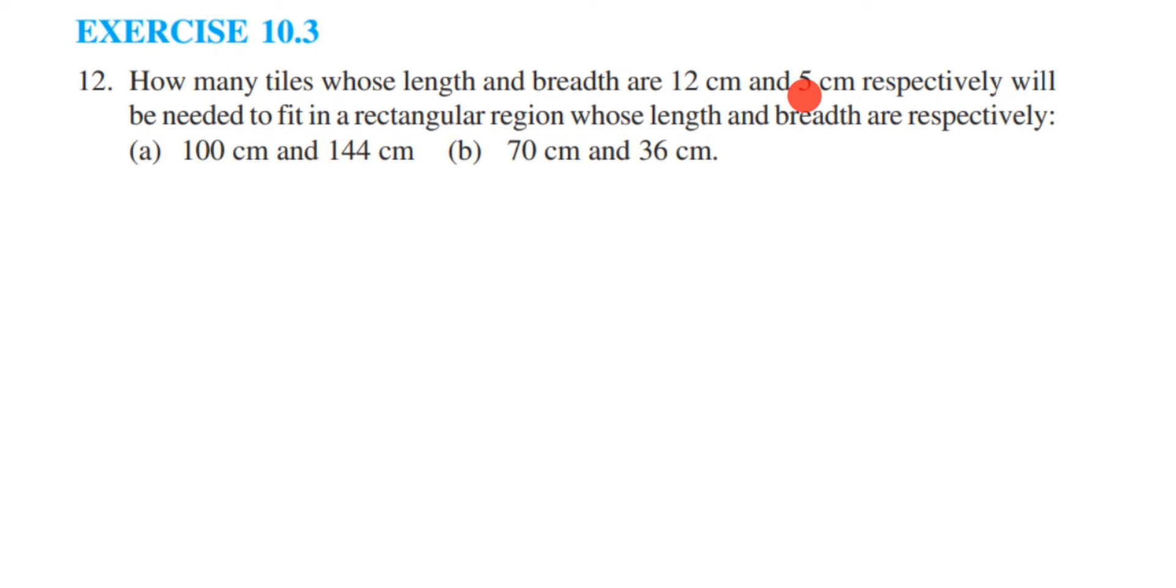Let me first write down what is given here. So they have given, I am talking about the tile here. So length is equal to 12 cm and breadth is equal to 5 cm. I have to first find out the area of the tile. So area of tile will become, it's a rectangle shape, so length into breadth, which is equal to 12 into 5, which is 60. We'll get 60 cm square.